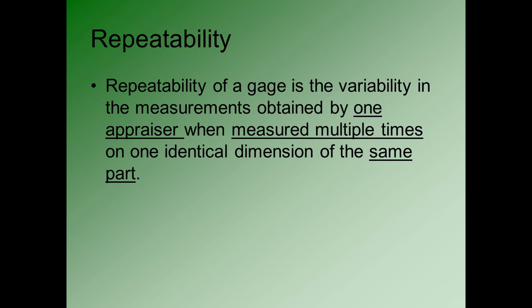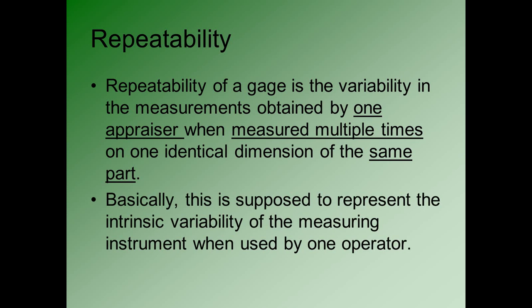We've addressed the issue of the bias of a gauge. Now we turn to issues relating to the variation of a gauge, and the first one is repeatability. The repeatability of a gauge is the variability in the measurements made by this gauge using one person — one appraiser — measuring multiple times the identical thing on one particular part or unit. It represents the intrinsic variability of the measuring instrument.